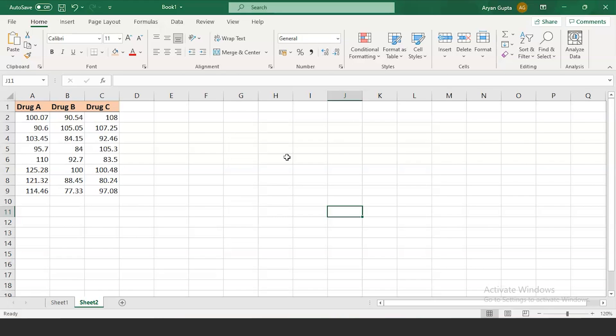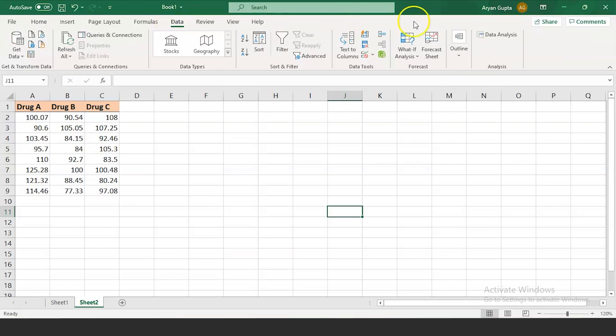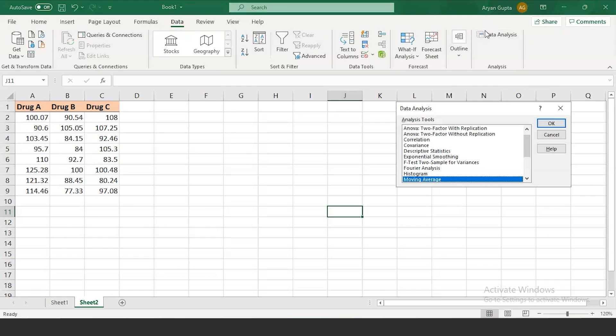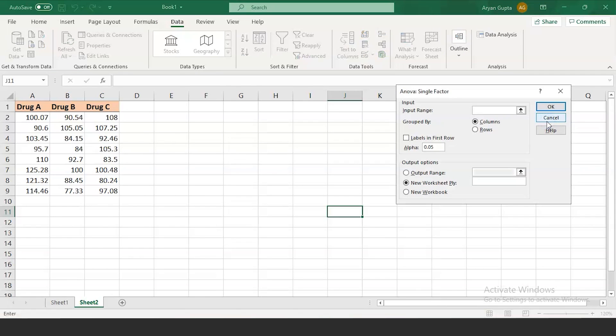The time is represented in terms of total hours and minutes. At the 0.05 level of significance, that is the alpha value, we need to test whether the mean time for the three drugs to cure the disease are equal. So how can we do that? We will first move on to the data tab and then click data analysis. We will select the ANOVA single factor and click OK.